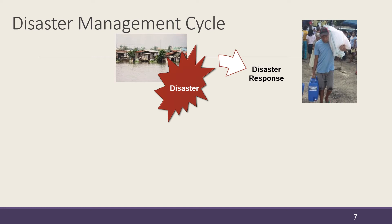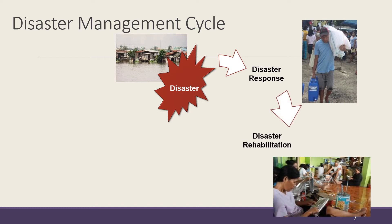For rapid onset disasters such as floods, typhoons, and earthquakes, this phase usually takes around 3 to 6 months. During Super Typhoon Yolanda, the disaster response phase lasted one year. After the first year anniversary, there was a policy to stop the provision of food aid — not because there was no more hunger in the extremely affected population, but simply because it was time to move from disaster response to the next phase of disaster rehabilitation.